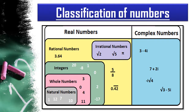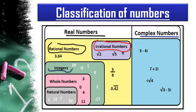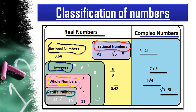Classification of numbers: numbers are classified into real numbers and complex numbers. Under real numbers, we have different types: rational numbers, irrational numbers, integers — which include positive integers, non-positive integers, and zero — as well as whole numbers and natural numbers. In this video, we are going to learn about these different types of numbers in detail.